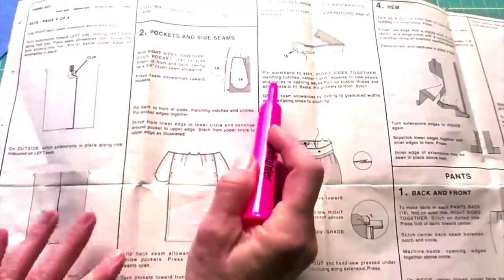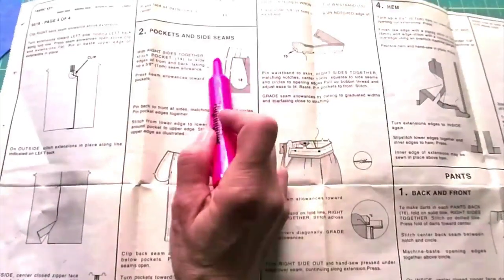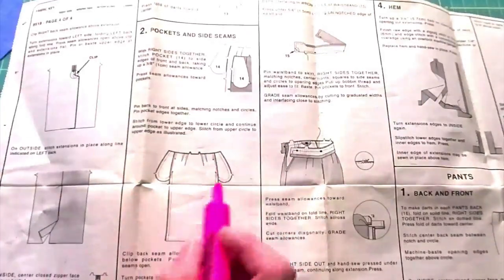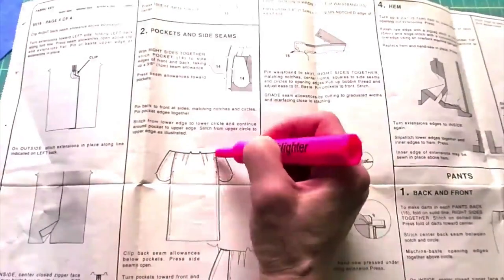This is the standard construction for these kinds of pockets. Sewing one pocket piece to the front, one to the back, and then you sew around that whole pocket and side seam and a little bit at the top here.